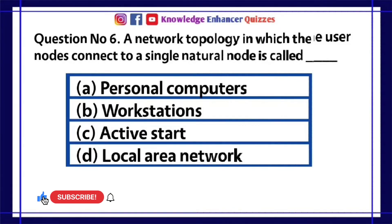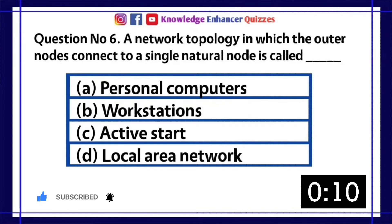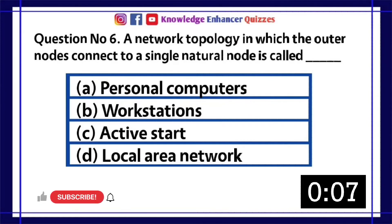Question number 6. A network topology in which the outer nodes connect to a single central node is called dash. A. Personal computers. B. Workstations. C. Active star. D. Local area network.